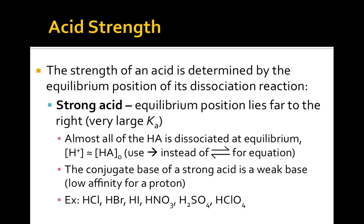The strength of an acid is determined by the equilibrium position of that reaction. A strong acid has such a large Ka value that the reaction essentially goes to completion — pretty much all of the original HA molecules ionize and form hydrogen ions. With strong acid reactions, we won't use equilibrium arrows because it's better represented with an arrow that only goes to the right. The conjugate base formed from a strong acid is a weak base. These six acids are strong acids: hydrochloric acid, hydrobromic acid, hydroiodic acid, nitric acid, sulfuric acid, and perchloric acid.